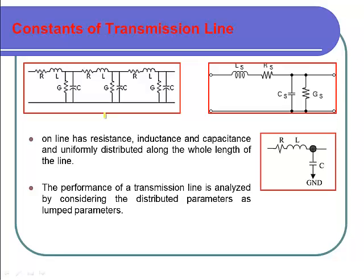We are going to discuss the constants of the transmission line — that means transmission line parameters: resistance, inductance, and capacitance. As we have already seen, the transmission network is a very long network in terms of hundreds of kilometers. Over this length, resistance, inductance, and capacitance formations will be present, so we have to consider these three parameters whenever we are analyzing the power system.